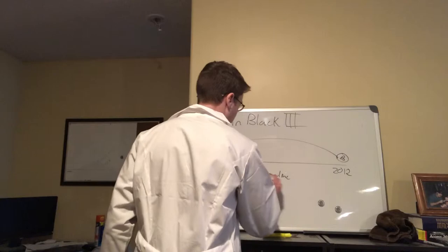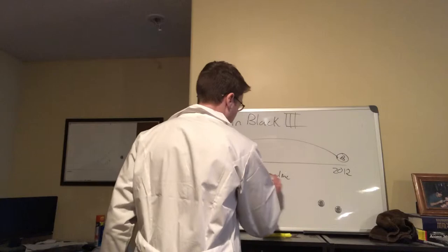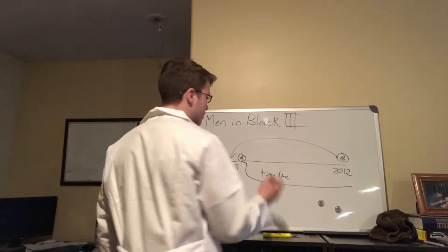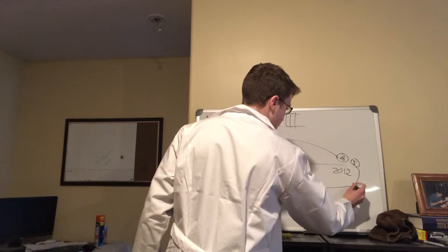So that creates a branch timeline. And everyone forgets Agent K even existed, except for his partner Agent J, who for some reason jumped with Boris into that timeline. This created a separate timeline, and only Agent J remembers Agent K, who was technically dead.